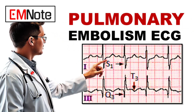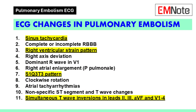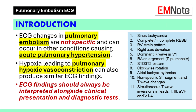Today, we will discuss the ECG changes observed in acute pulmonary embolism. These findings are not specific to pulmonary embolism and can also occur in conditions causing acute pulmonary hypertension, such as hypoxia leading to pulmonary hypoxic vasoconstriction. While recognizing these changes is valuable, they must always be interpreted alongside the patient's clinical presentation and other diagnostic findings.